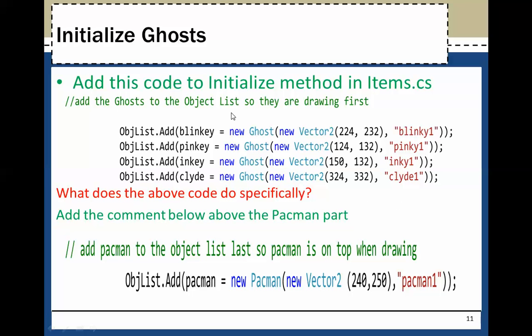Add this code to the initialize method in items.cs. This will add blinky, pinky, inky, and clyde to the objects list. Answer this question: what does this code specifically do? The answer is not this code by itself does not just add the ghosts to the world, but what does it do instead? Work through it, what does this code do?